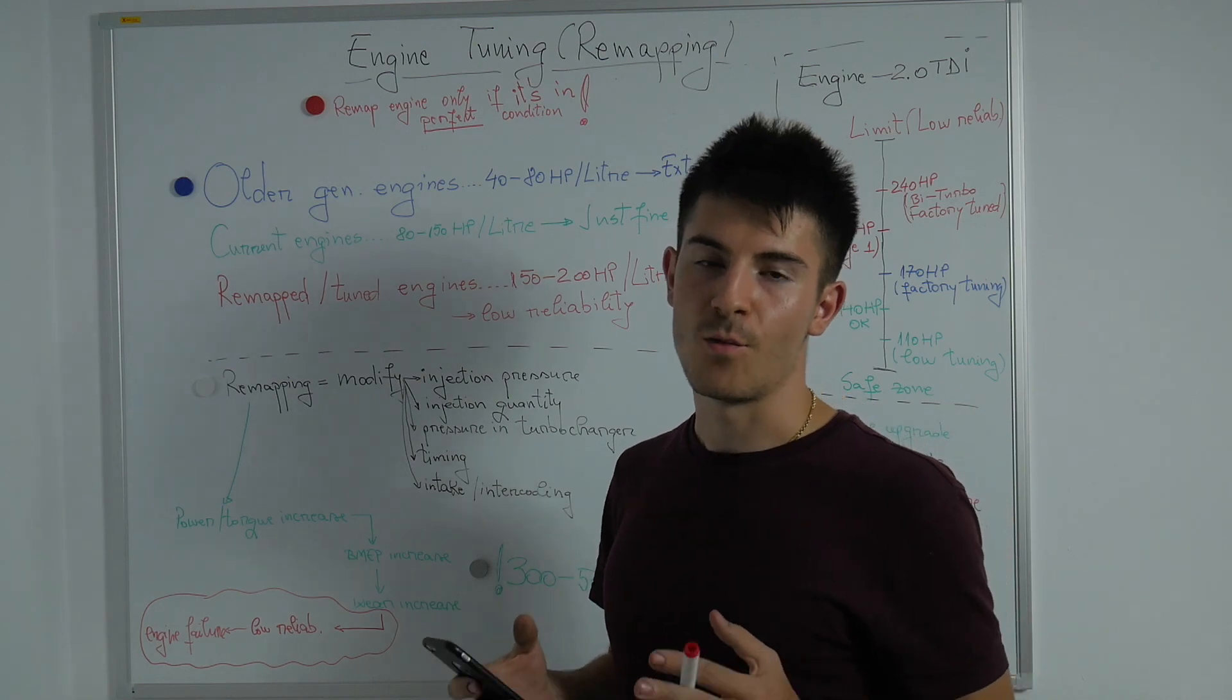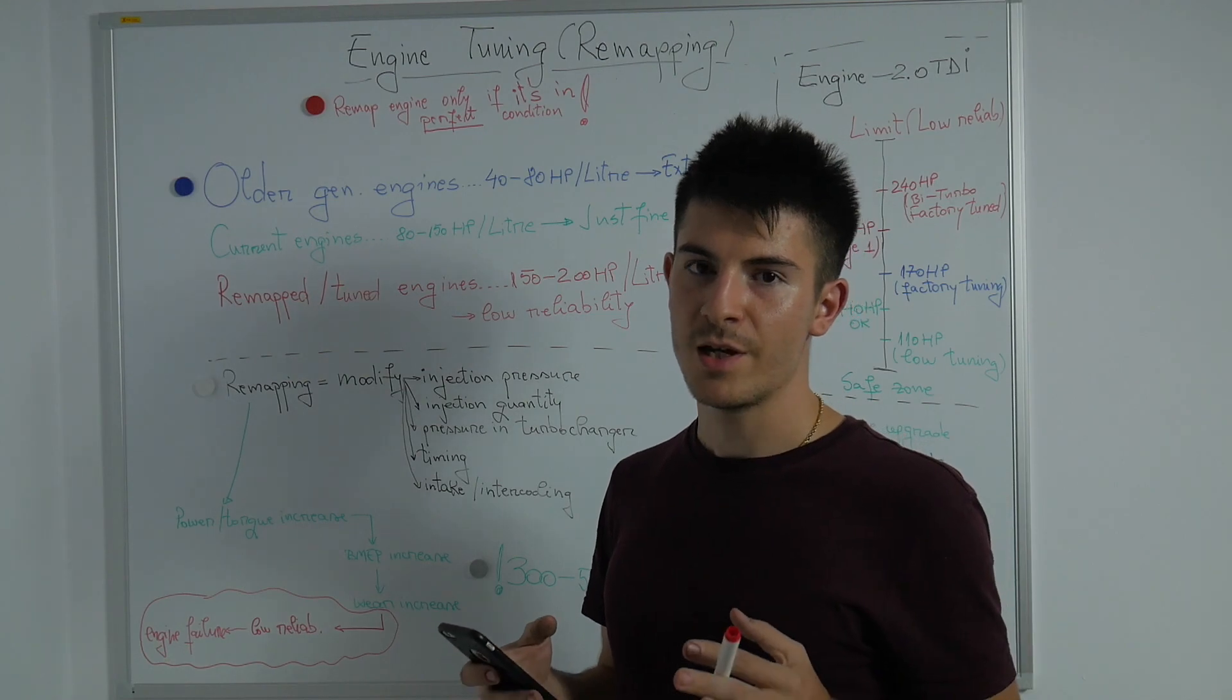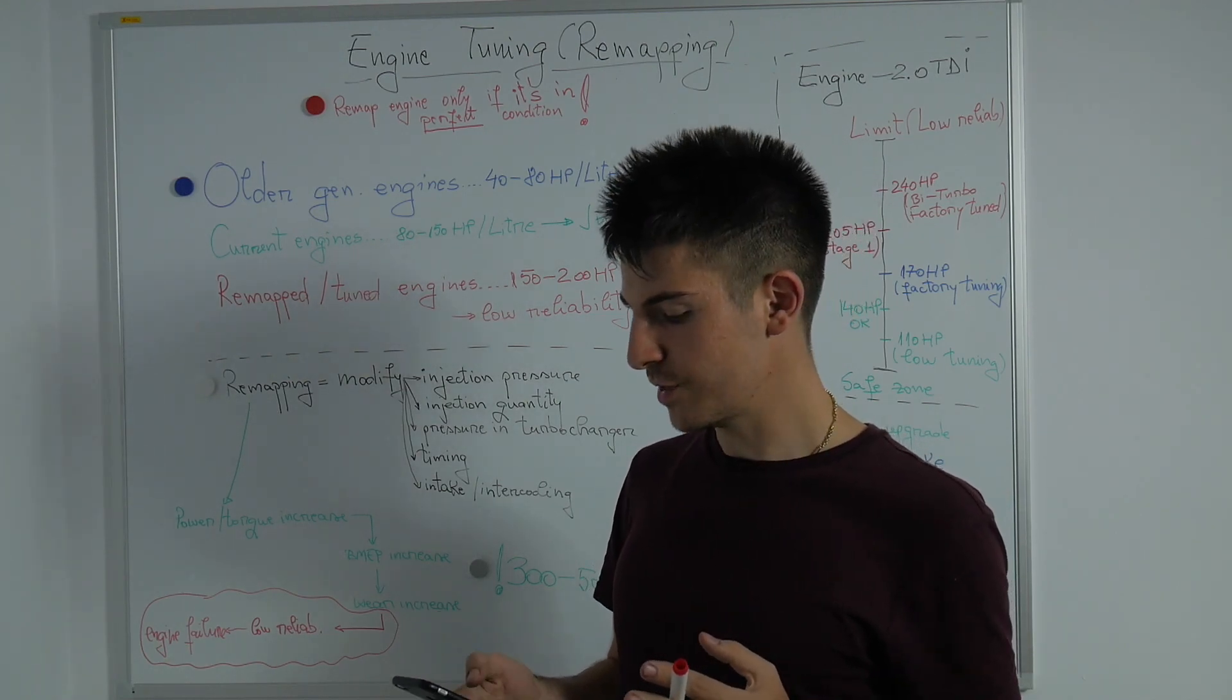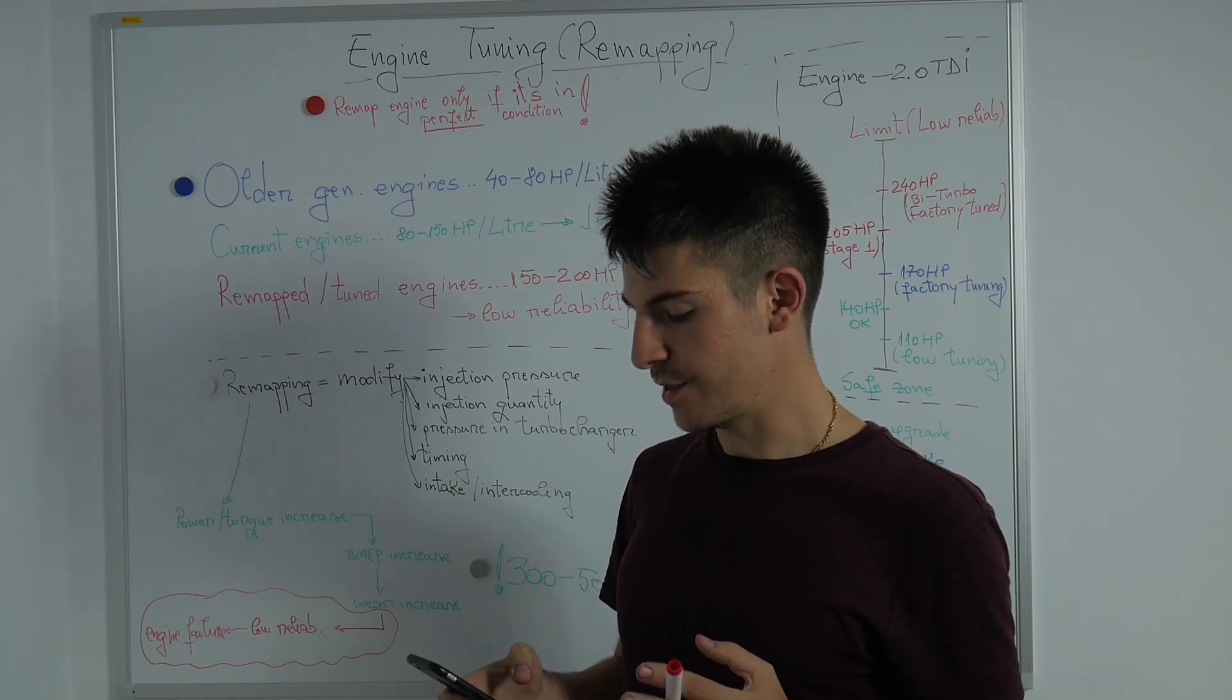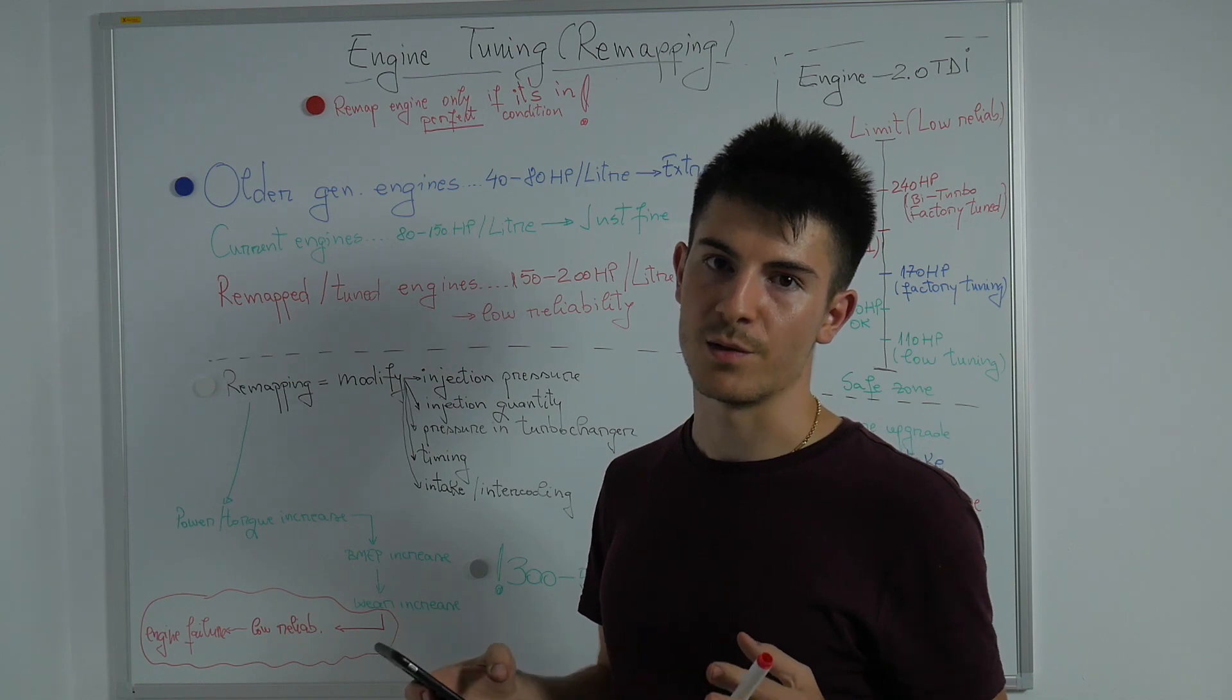My personal car has a 1.6 naturally aspirated engine with a compression ratio of 10.2 and it has just 102 horsepower, which is equivalent to exactly 63 horsepower per liter which is just fine. It's an extremely reliable engine.